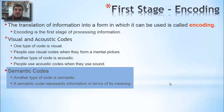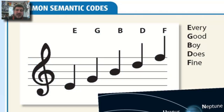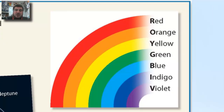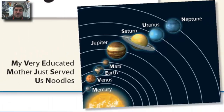For example, 'Every Good Boy Does Fine' — if you're a musician, you'd know that represents the lines on a musical staff. Roy G. Biv might sound like a friend's name, but if you're an artist or studying light, you'd know it's the colors of the rainbow. 'My Very Educated Mother Just Served Us Noodles' represents the planets — no Pluto anymore, unfortunately.